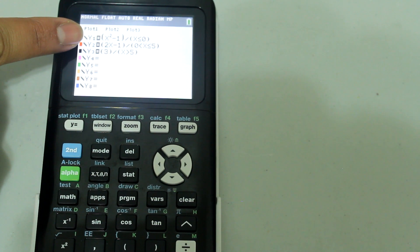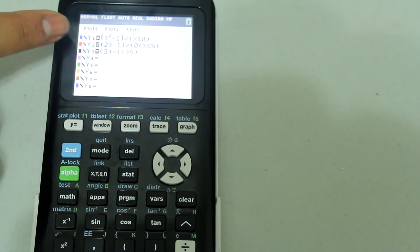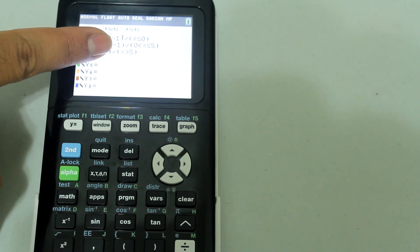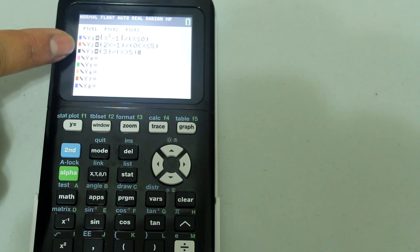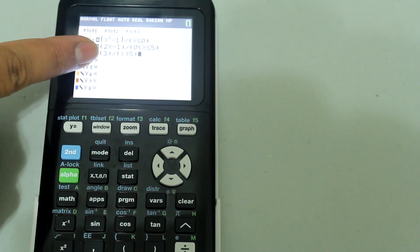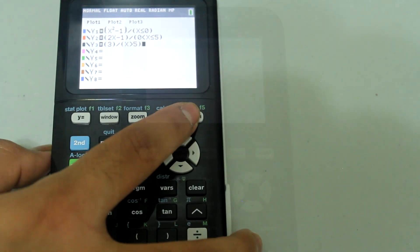Y1 equals (x² - 1) divided by when x ≤ 0, 2x - 1 division sign when 0 < x ≤ 5. And y equals 3 when x > 5. And then we're going to go ahead and graph.